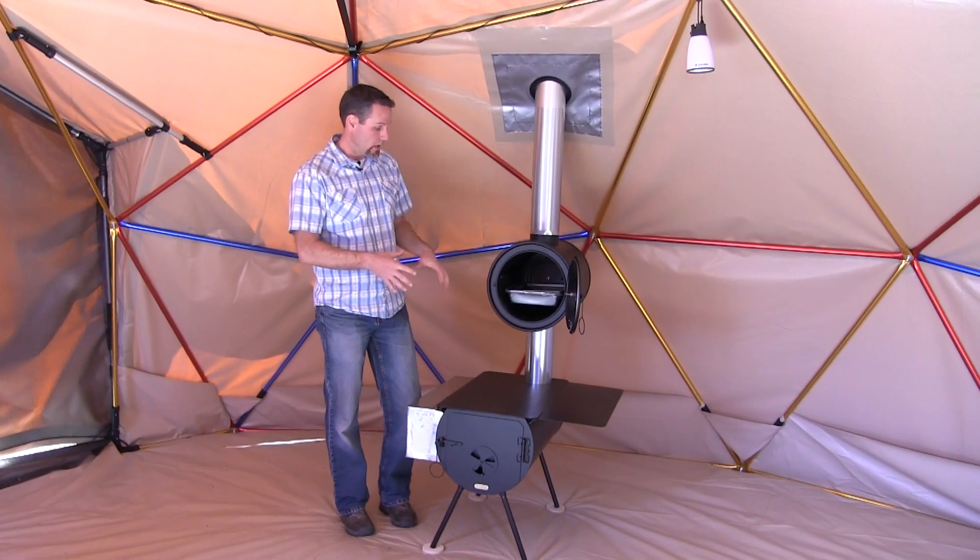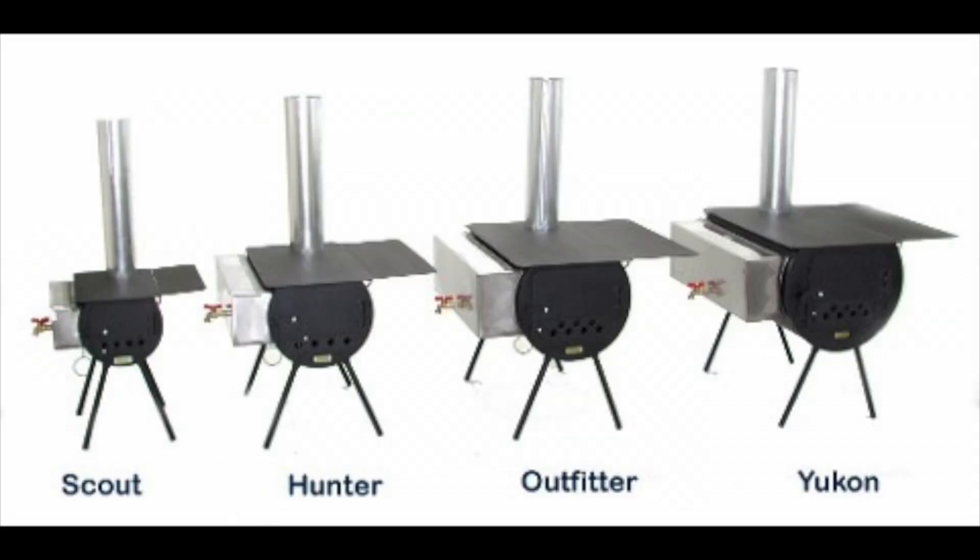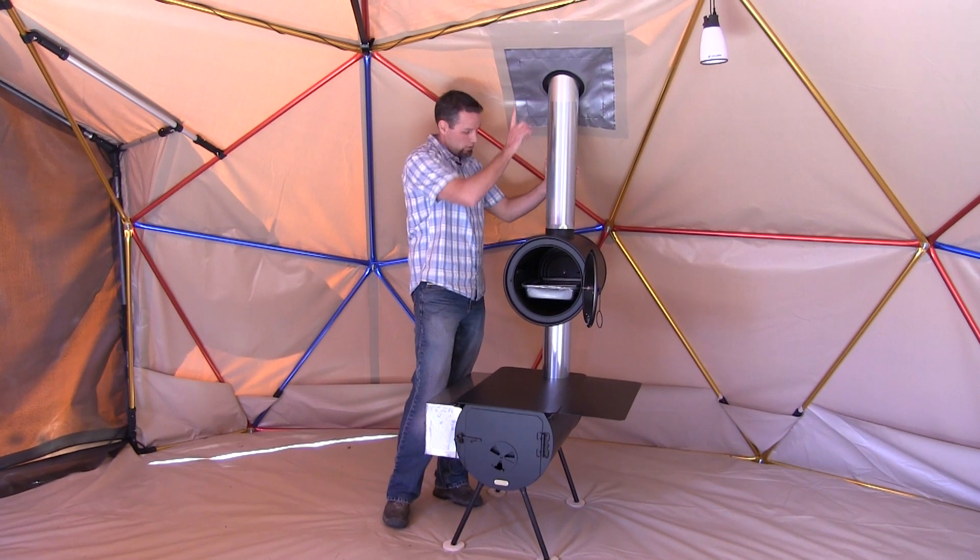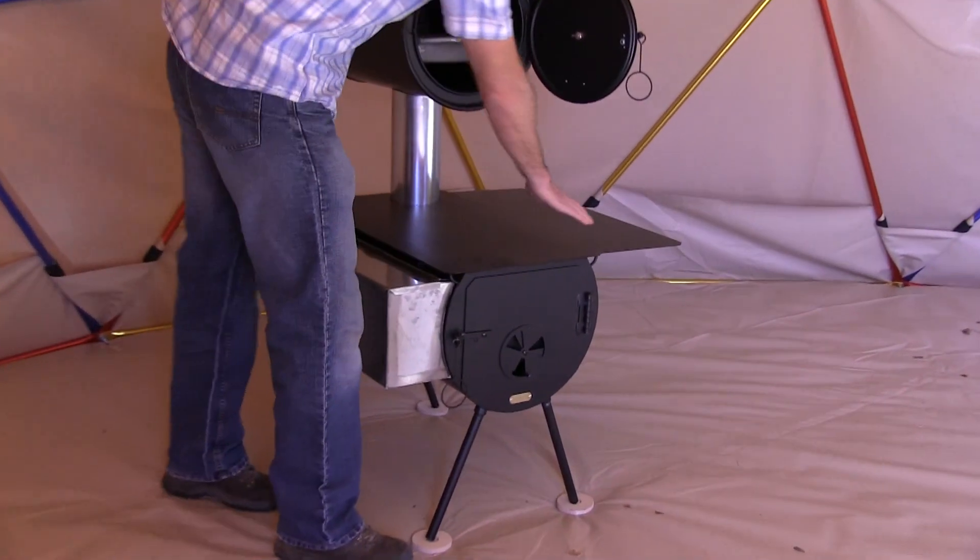One of the other reasons we've chosen them is that it all comes self-contained. When you purchase a package—one of the stove packages, the Yukon, the Outfitter, the Hunter package—you get your nesting stove pipe, your legs, your water jacket, and your warming tray.